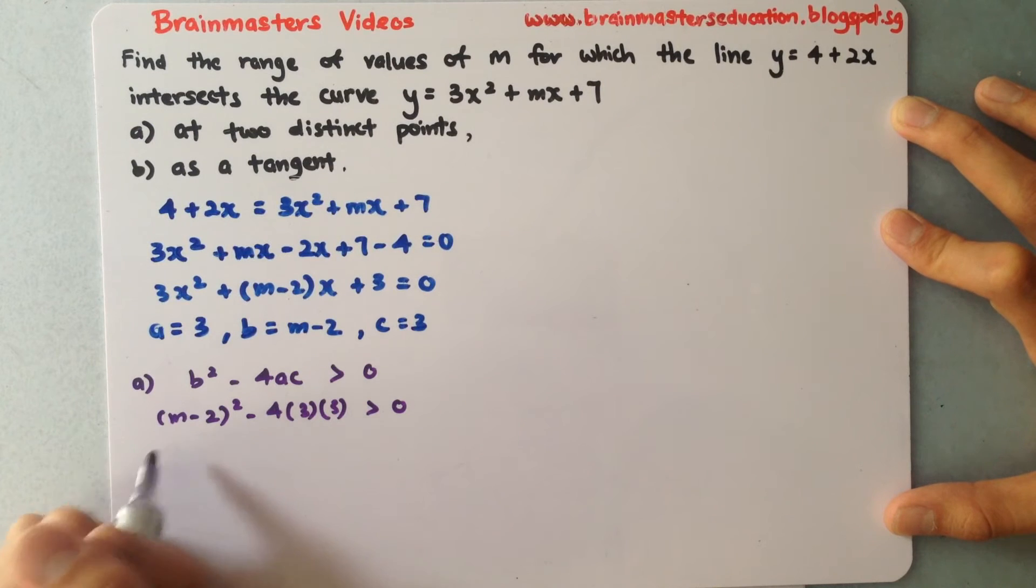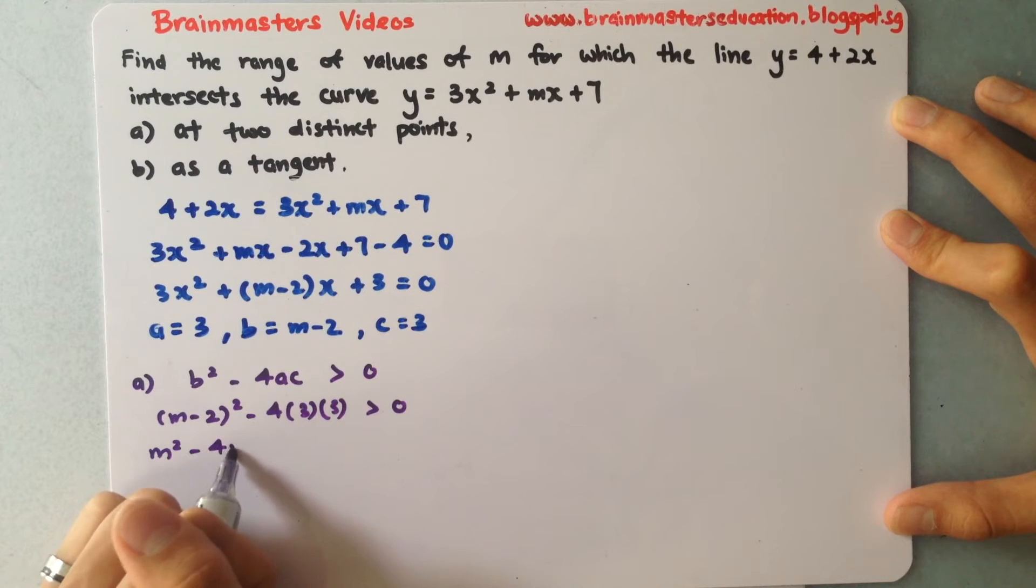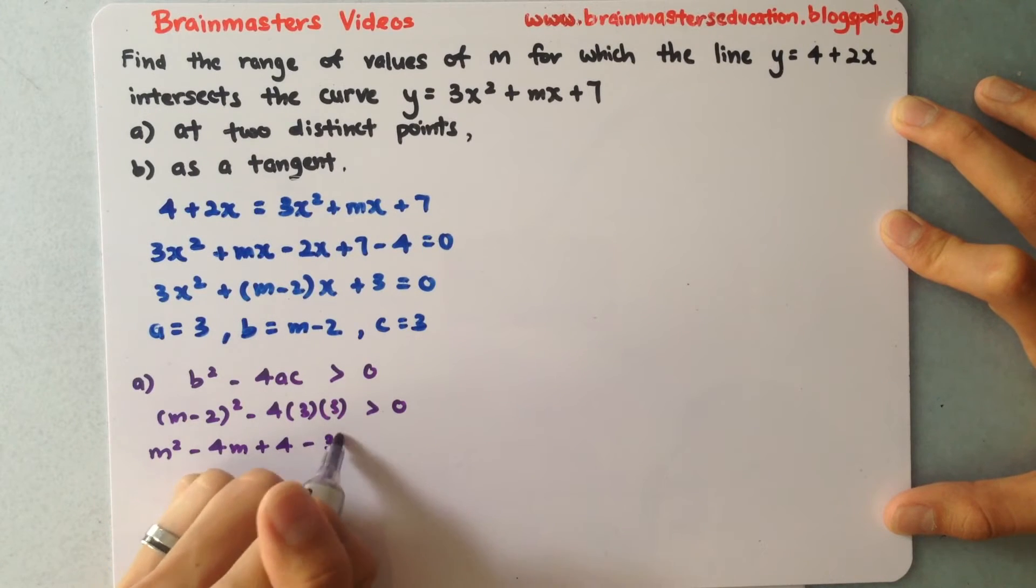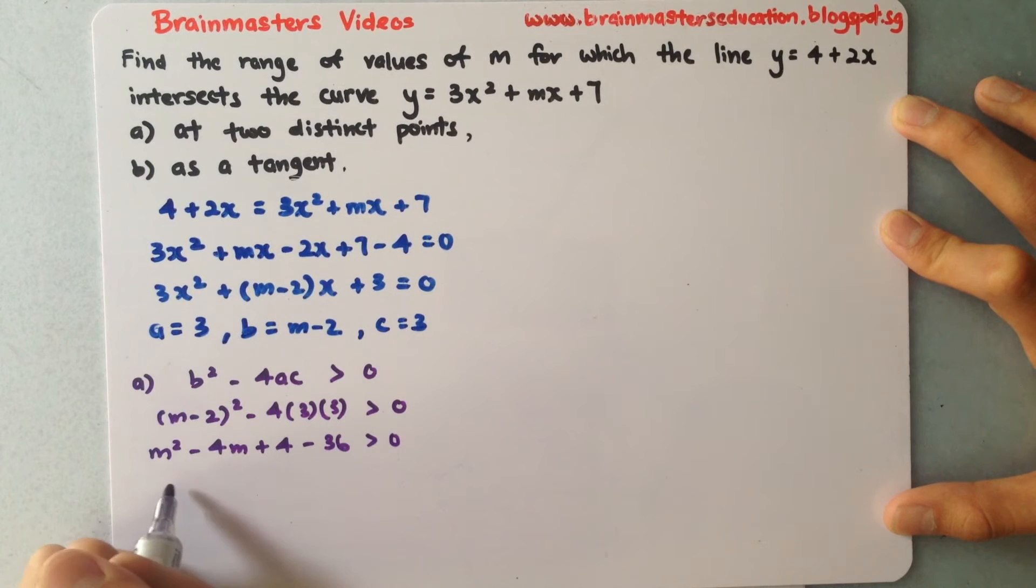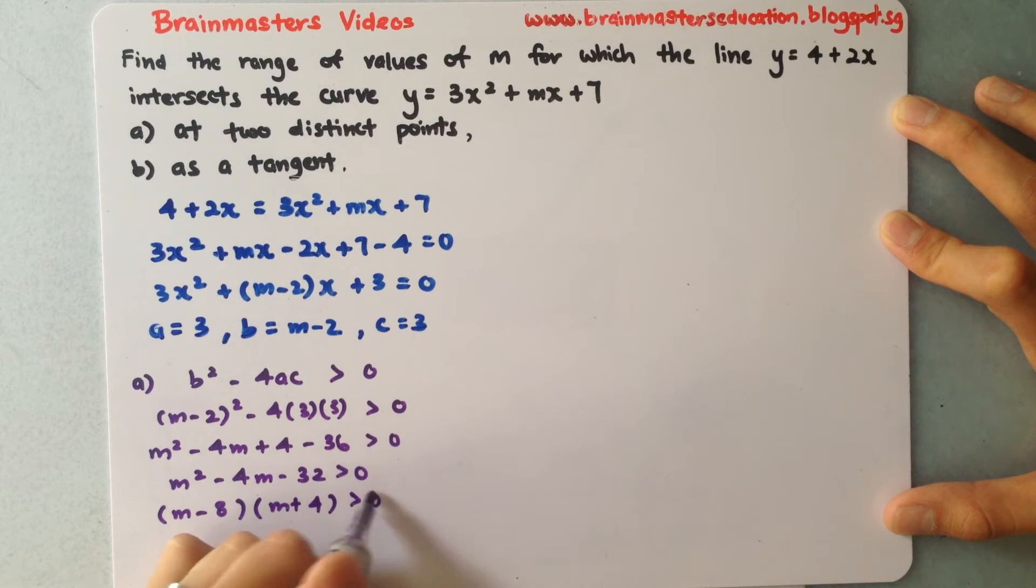Expanding: m² - 4m + 4 - 36 > 0. Simplifying and factorizing: (m - 8)(m + 4) > 0.